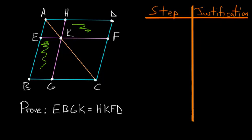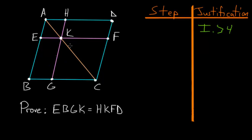To prove that these complements are equal to each other, we first need to start with Book 1, Proposition 34, which says that the diameter bisects the parallelogram into two equal parts. In other words, triangle ABC is equal to triangle ADC.